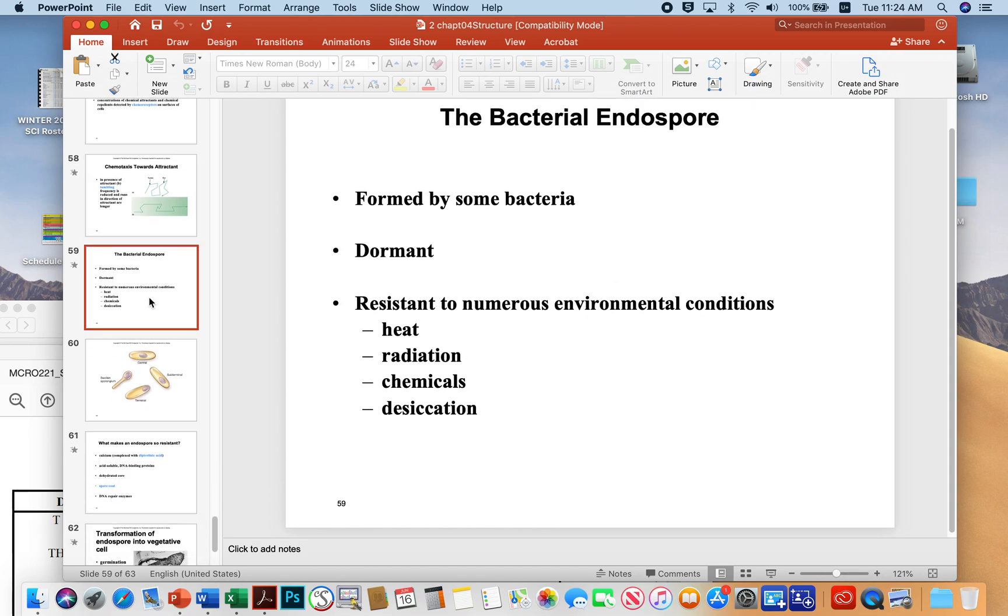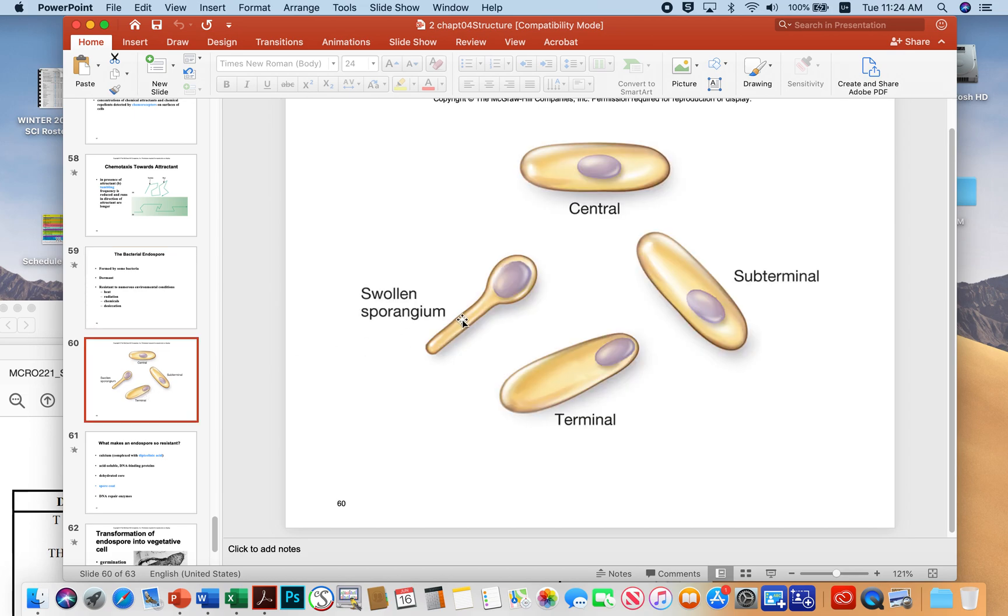The last concept here is the concept of an endospore that are formed by certain bacteria, not all. They're a dormant form of life, but they give the microbe resistance to a variety of environmental conditions: heat, radiation, chemicals, and drying. A lot of soil microbes produce these spores because the soil is a really terrible place to live. Sometimes it dries completely out.